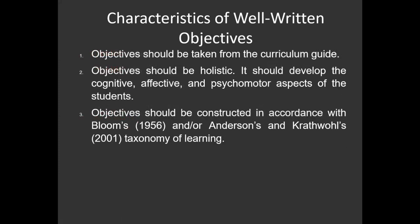Characteristics of well-written objectives: number one, objectives have to be taken from the curriculum guide. All subjects from Kindergarten to Grade 12 have a curriculum guide, which is readily downloadable from Google. It gives us everything — the topics, content standards, performance standards, and learning competencies. If you want to select a topic or copy the objectives, otherwise known as learning competencies, refer to the curriculum guide.